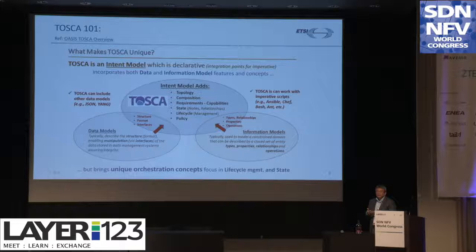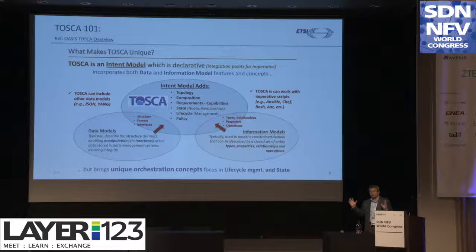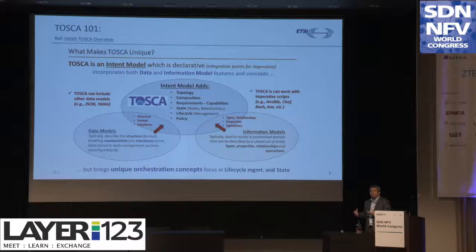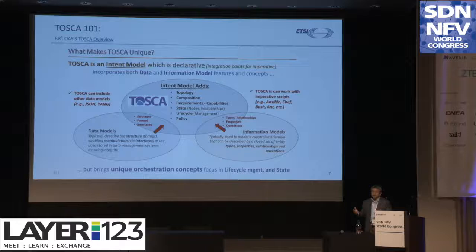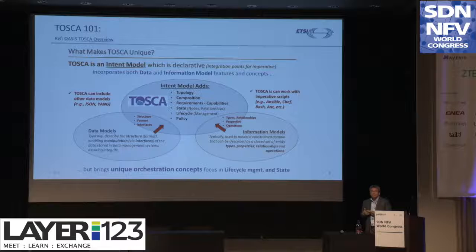Within the TOSCA intent model, you can begin to build your applications or services with compositions. The requirements and capabilities feature is very unique — they go side by side. You describe the requirements in one component of your software and the capabilities of another component. The orchestrators can then find and match the two software components via relationships. They also have states and lifecycle, so you can manage each software component independently. And finally, they have policies that you can wrap around the entire topology or within each node.